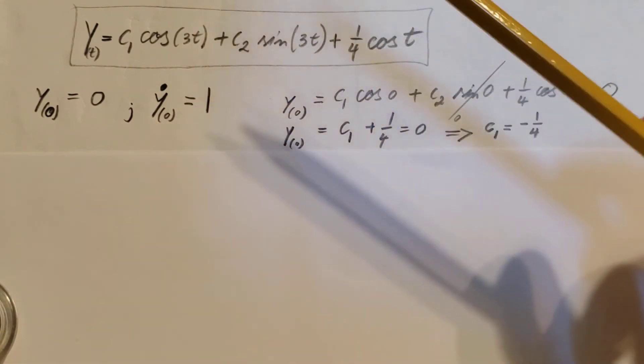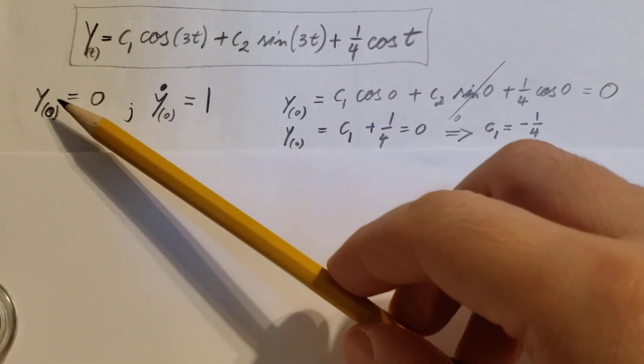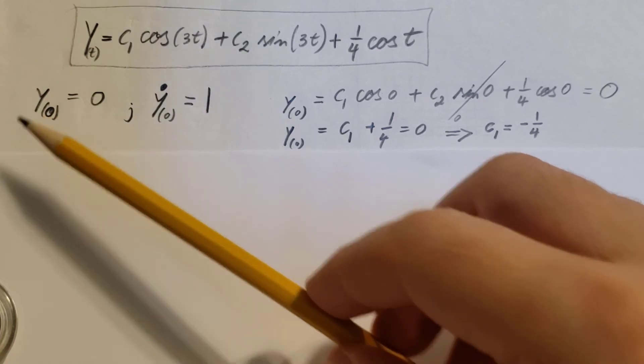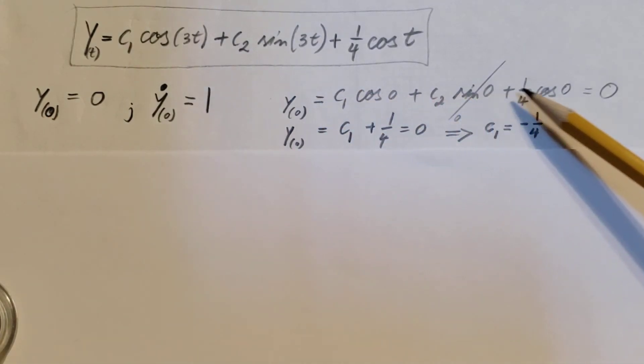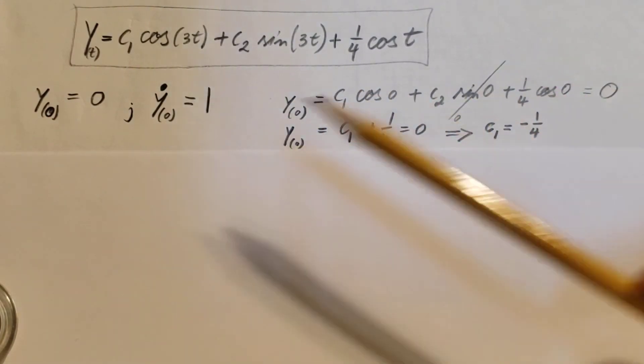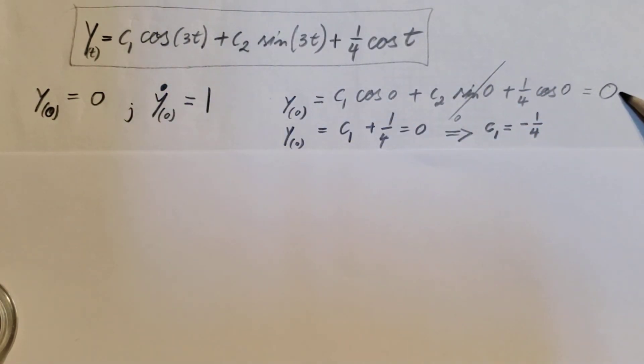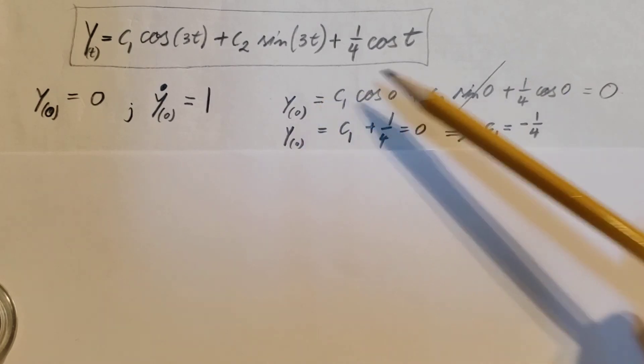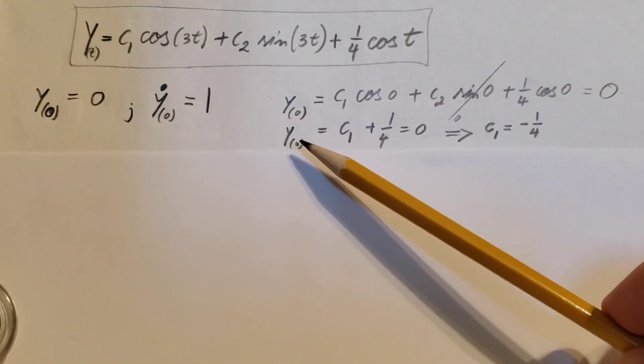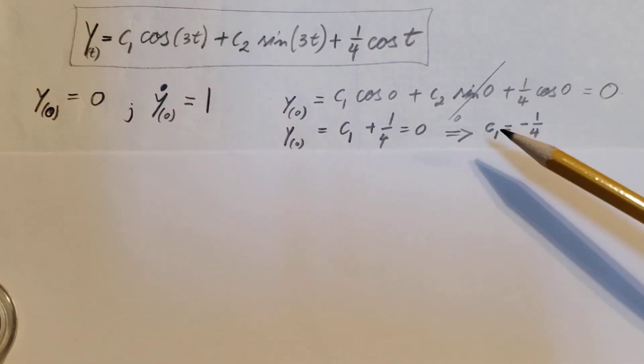From here to continue, we take this one first and plug it into our solution. Everywhere where we see a t, we plug in zero. That's what you see here, and equal to zero. We simplify and from this we can see that c1 is equal to negative one-fourth.